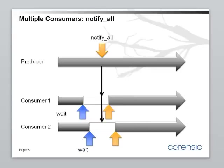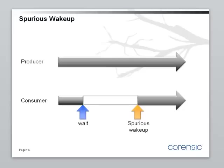Here's the notify_all version. Two consumers are waiting, the producer calls notify_all, and both consumers wake up and continue. On some operating systems, it's easier to implement condition variables if you can have spurious wake-ups. A spurious wake-up is when the consumer wakes up even though nobody called notify. A condition variable is not a very good communication channel — it can transmit only one bit, and it doesn't do it reliably. The recipient doesn't really know if it was sent or if it was a spurious wake-up.